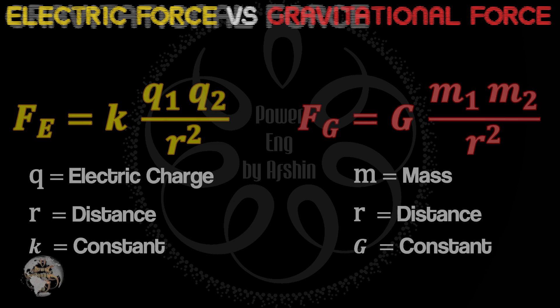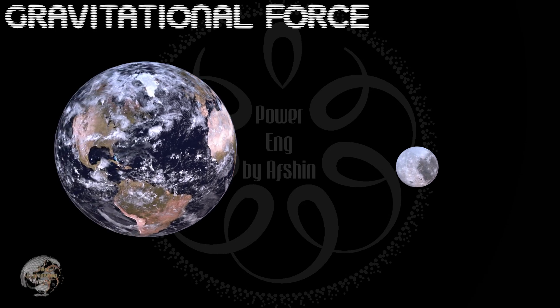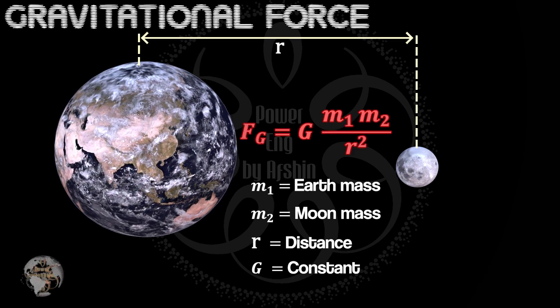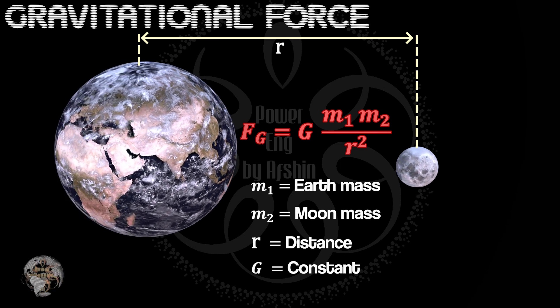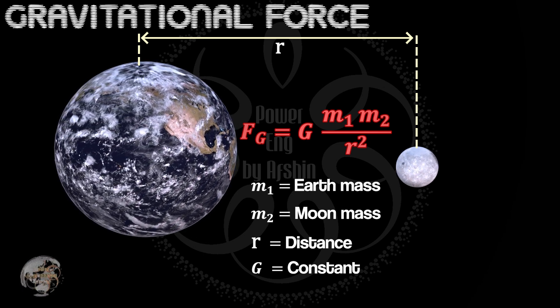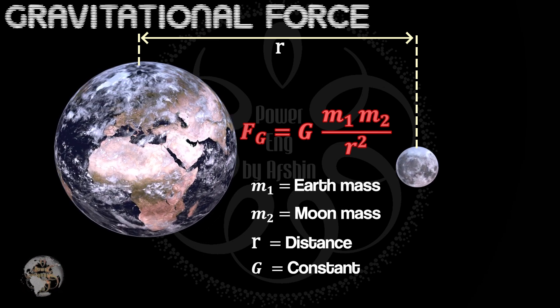This is very similar to the gravitational force between two objects. For example, consider the Earth and the Moon. They attract each other through gravity, as described by the formula shown. Gravitational and electric fields share some interesting similarities, which we'll explore more later.